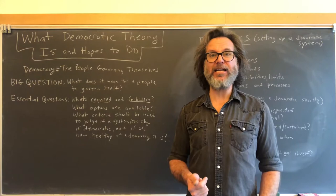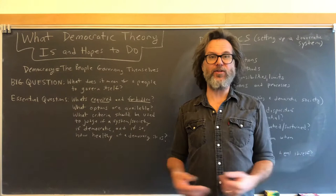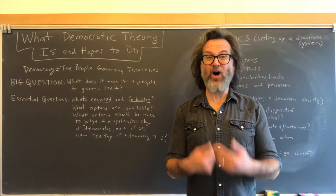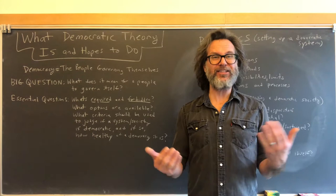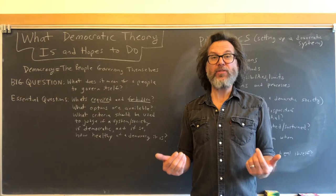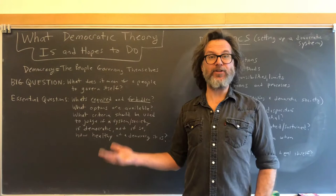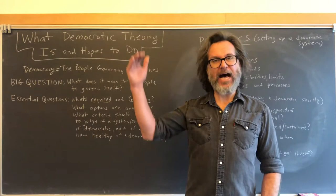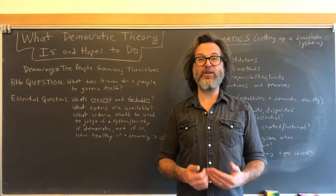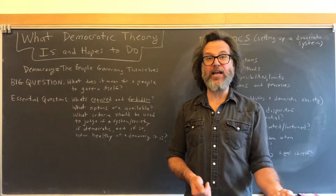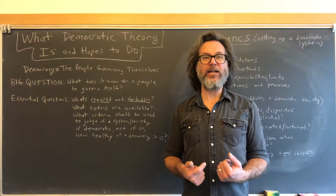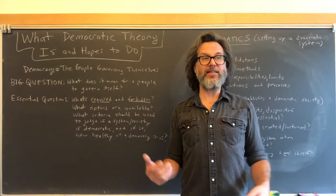The list of options is actually quite large — almost always larger than people in a particular democratic society think. When you live in a democratic society like the United States — the world's oldest continually operating democracy — we're so familiar with certain features of our democratic system that we think that's essentially the full range of options available. Many people don't realize that other democratic societies do things we don't do that are legitimate options for a self-governing system.